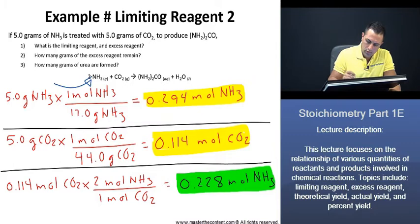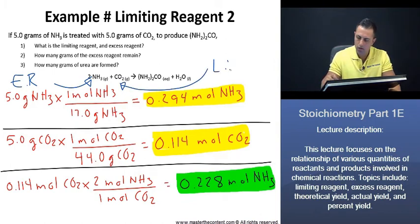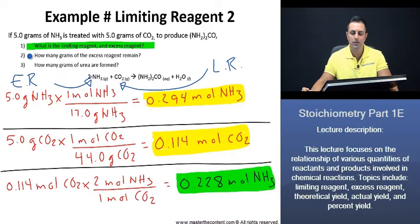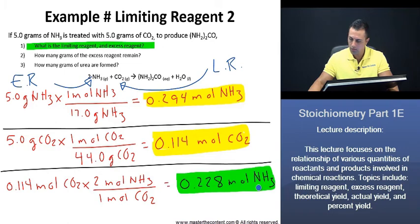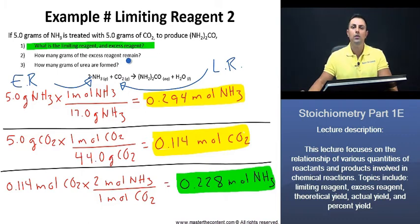So the limiting reagent is carbon dioxide and the excess reagent is ammonia. Now that we're done with number one, let's continue with number two: how many grams of the excess reagent remain? To find this, we take the 0.228 moles of ammonia being consumed, convert it to grams using its molar mass, then subtract that from the initial 5 grams to find how many grams of ammonia remain.